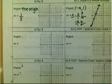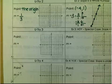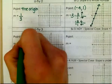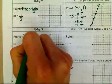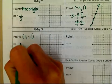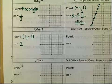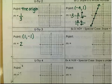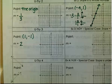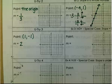For you try 3: use the point (1, −1) and a slope of 2. Pause the video, try that graph, and then resume the video to talk about example 3.